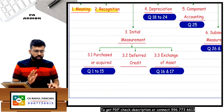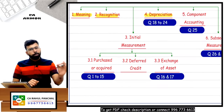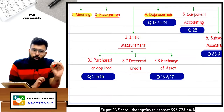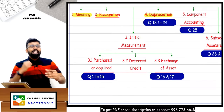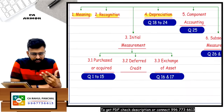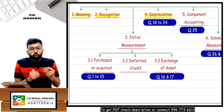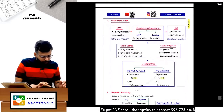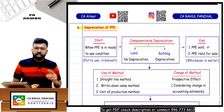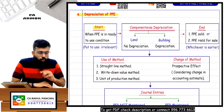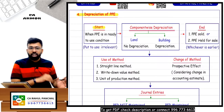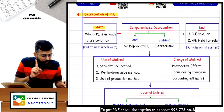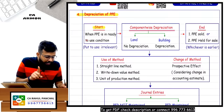We have covered meaning and recognition. Now let's go to depreciation and component accounting. Depreciation is the reduction in the value of an asset - everybody knows this. When you use an asset, there is a reduction in its value. When do you start depreciation? Depreciation will start when the PPE is ready to use condition. Put-to-use date is irrelevant.